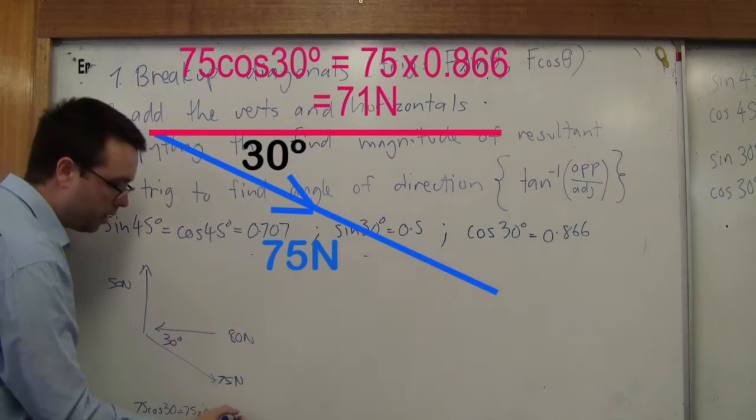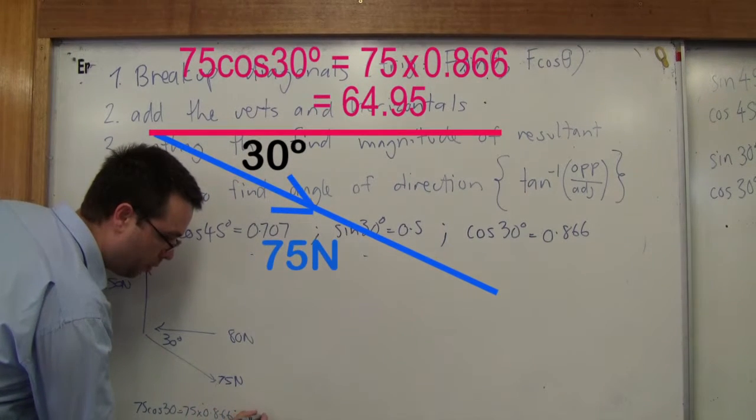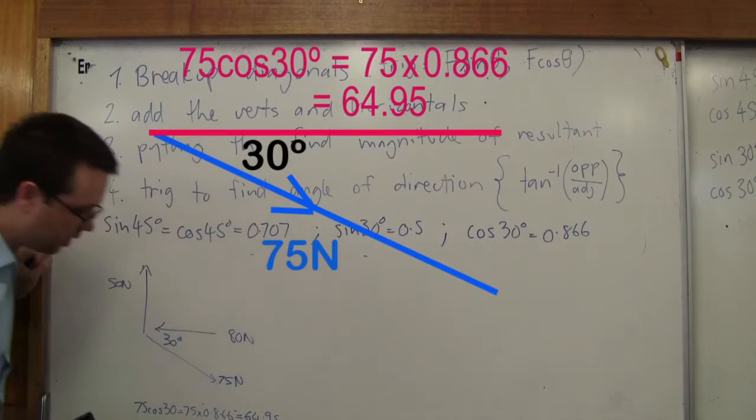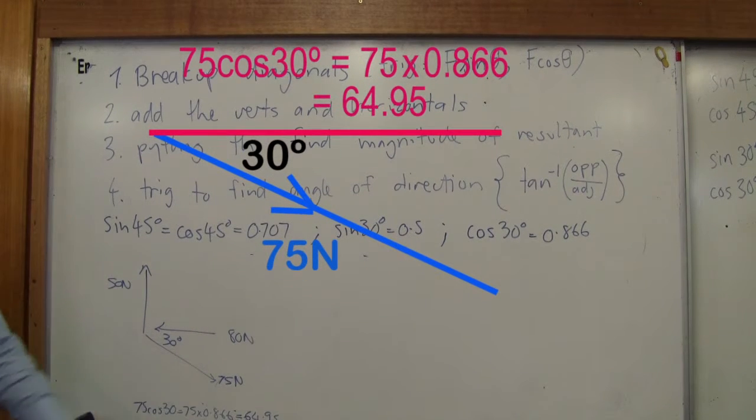Could someone do that for me in the calculator? Okay, 64.95. Does that seem plausible? Yes, it seems plausible because it's less than my hypotenuse.